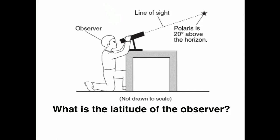So the information that's being given to us is that Polaris has an altitude of 20 degrees. What's the latitude? Well, latitude matches altitude in the Northern Hemisphere for Polaris. So that must mean that this observer is standing at 20 degrees north.